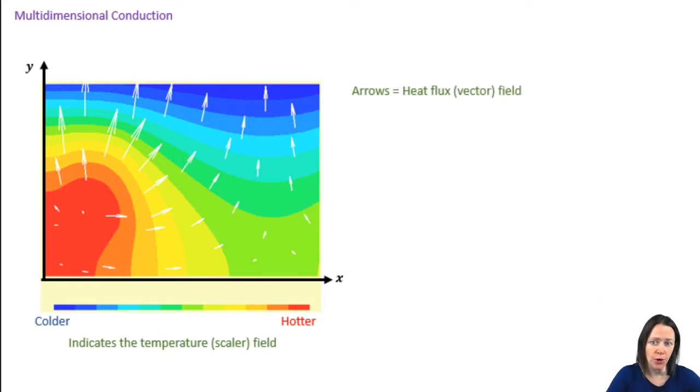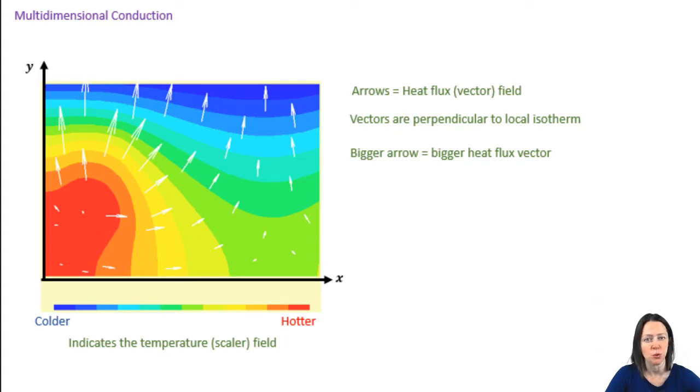Those little white arrows are indicating the direction of heat transfer. They are the heat flux vectors across the medium. Note that each one of those vectors are perpendicular to the local isotherm, local meaning at a particular x and y coordinate. The bigger or longer the arrow indicates a bigger heat flux vector. On the left, where you see those red, orange, and yellowish bands, you can see that temperature is changing more across a shorter distance. If you think back to Fourier's law, you might be able to see why that is.